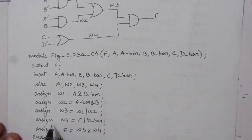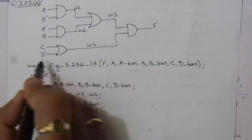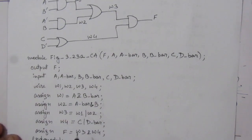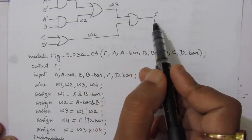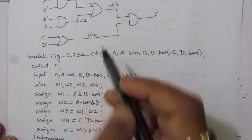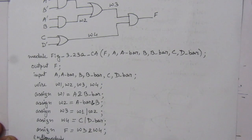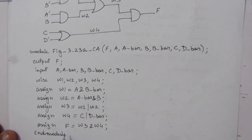W4 is C OR D-bar, so assign W4 = C OR D-bar. The output F is the AND operation between W3 and W4, so assign F = W3 AND W4. This completes the third part of the problem.